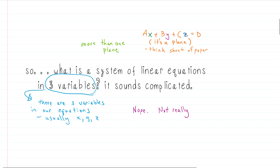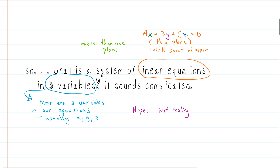The second thing we should talk about is that these equations in our system are linear. That means they fit the form: Ax + By + Cz = D. The x, y, and z are just variables, and they will not have powers on them bigger than 1. The 1 will be implied and won't actually be written, but you won't see a 2, a 3, or a one-half, or anything else.